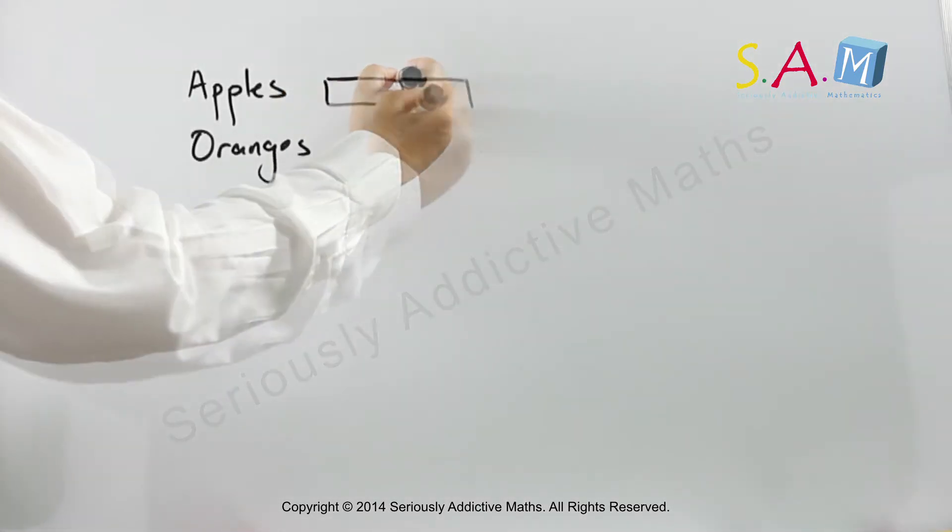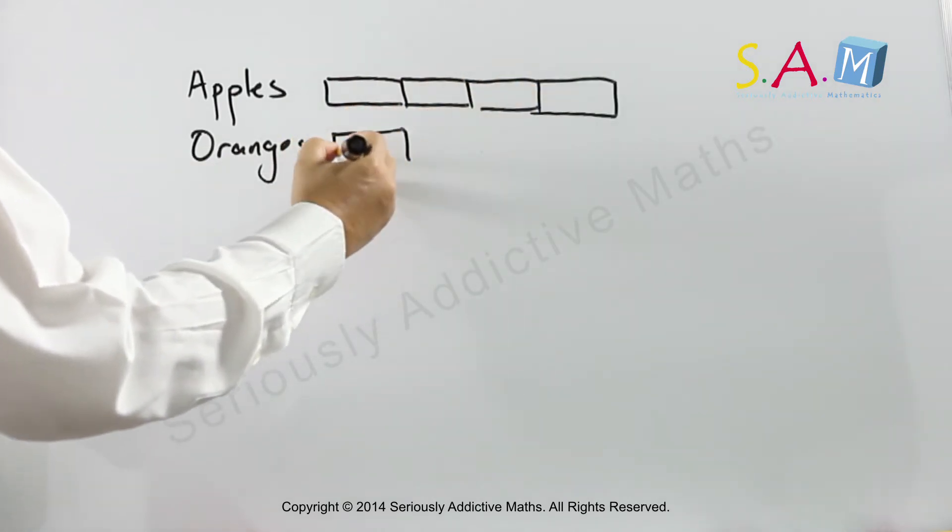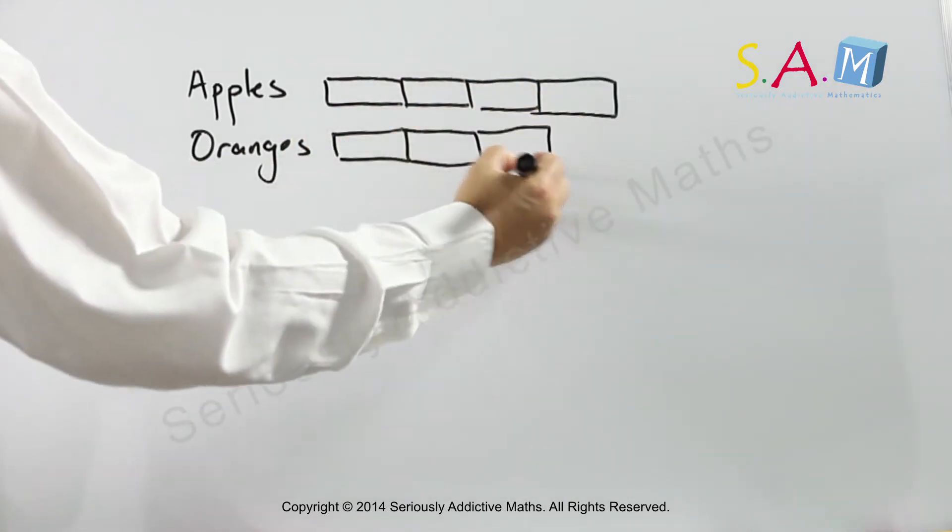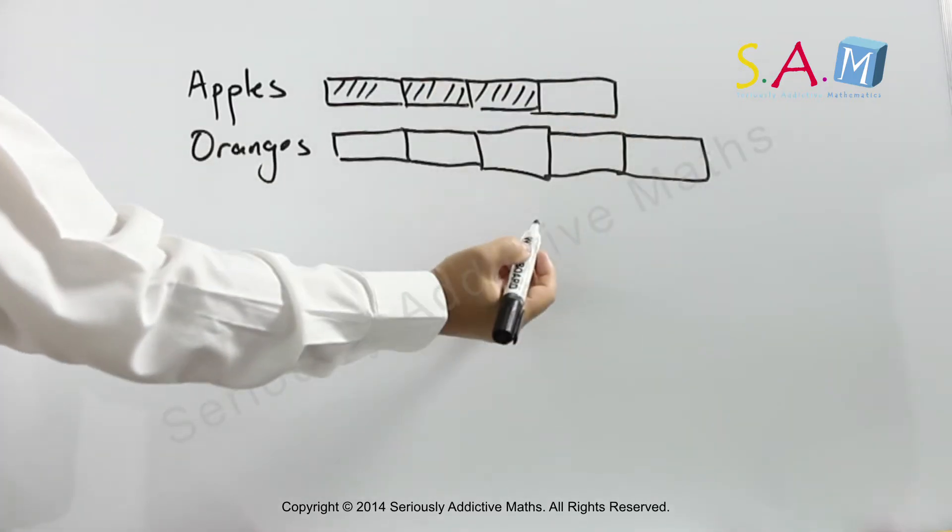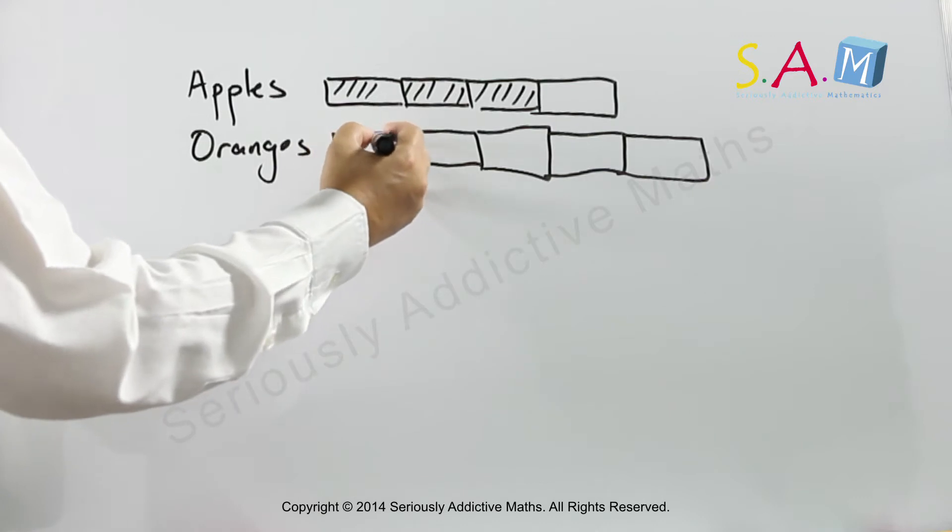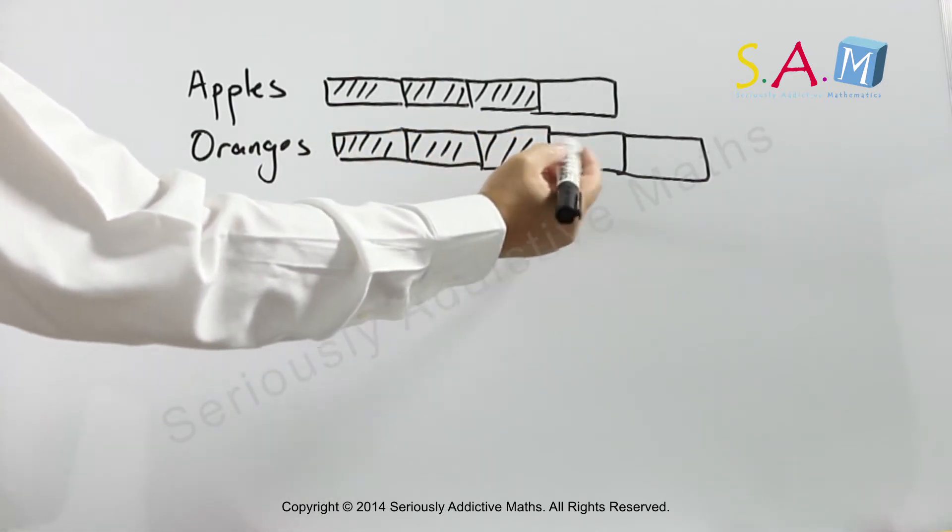Three quarters of the oranges sold is the same as three-fifths of the oranges sold. Three parts of the oranges, which is actually the same as three parts of the apples sold.